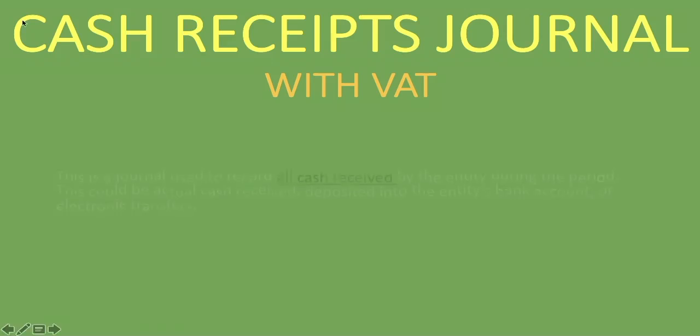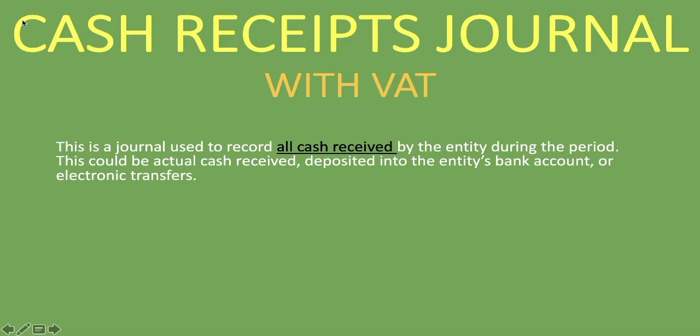In that previous lesson we did not take into account VAT — we ignored it. But if you have a question where you have to take VAT into account, this lesson should greatly help you. So what is the cash receipts journal? Like we said in our previous lessons, this is a journal used to record all cash received by the entity during the period. This could be actual cash received, deposited into the entity's bank account, or electronic transfers.